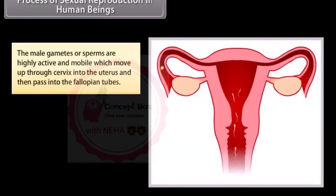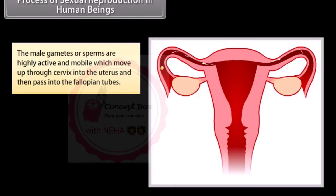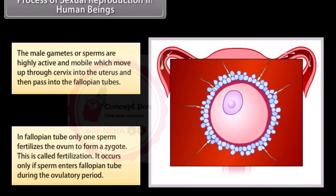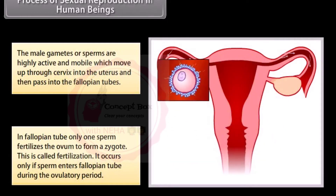Process of sexual reproduction in human beings: the male gametes or sperms are highly active and mobile, moving up through the cervix into the uterus and then into the fallopian tubes. In the fallopian tube, only one sperm fertilizes the ovum to form a zygote — this is called fertilization, and it occurs only if the sperm enters the fallopian tube during the ovulatory period.